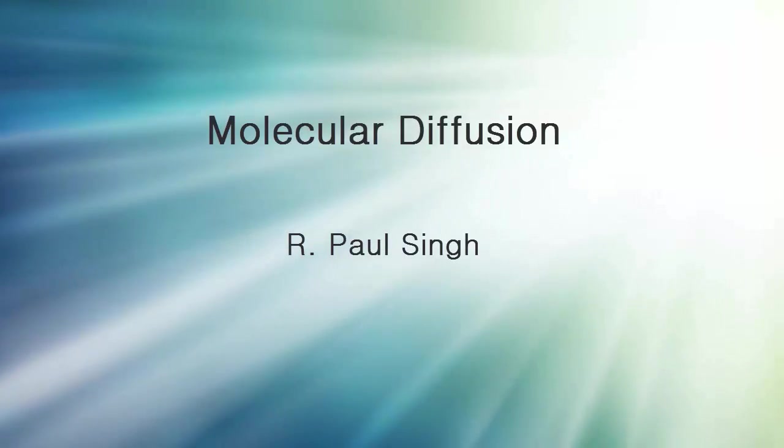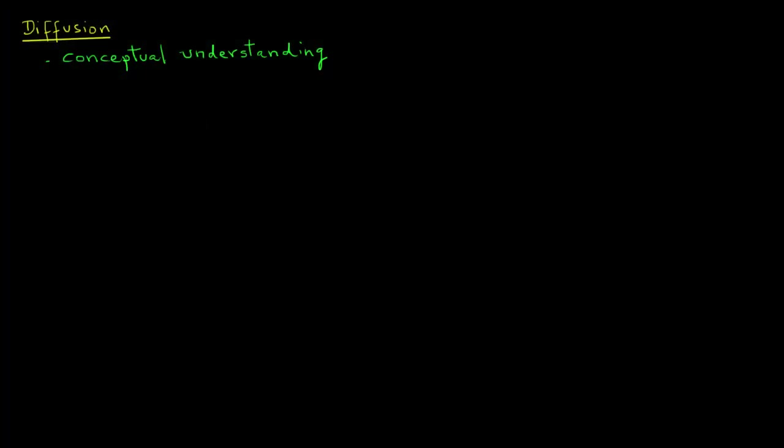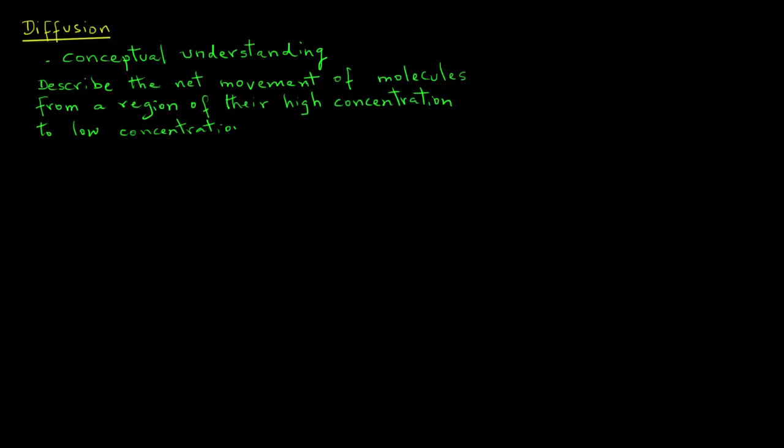Let's try to get a conceptual understanding of the diffusion process. In the diffusion process, we are concerned with how matter gets transported from one part of the system to another. This happens due to random molecular motion. Diffusion describes the net movement of molecules from a region of their high concentration to low concentration.